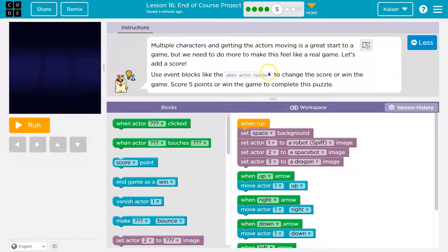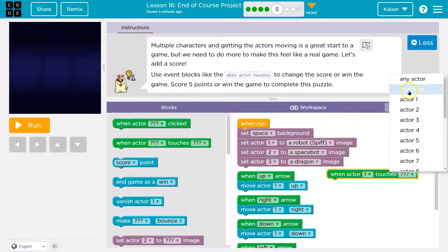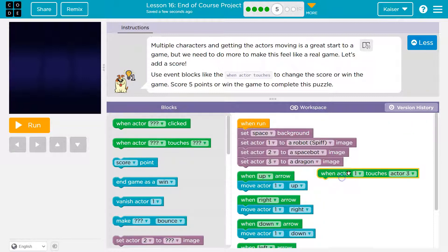Okay, cool. So when actor touches, it should be green because it's an event. Yep, right here. I'm going to grab that and pull it out. Now, when the actor touches what? Well, I could say the space robot. It's really up to me, right? When actor, when actor one, I mean, so right now, actor one is my space robot touches actor anything touches actor two, I'm going to say actor three, the dragon, right? And we get to pick.